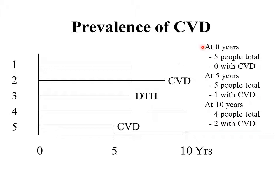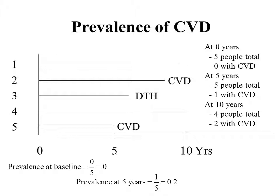Let's summarize what this graph tells us. At zero years, or the beginning of the study, we had five people total and zero had cardiovascular disease. At five years, we had five people total and one had cardiovascular disease. We can calculate the prevalence at five years: one out of five is 0.2, or 20% — so at that point in time, 20% of participants had cardiovascular disease.